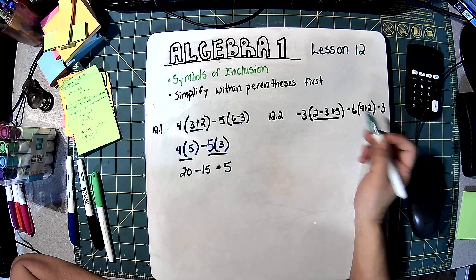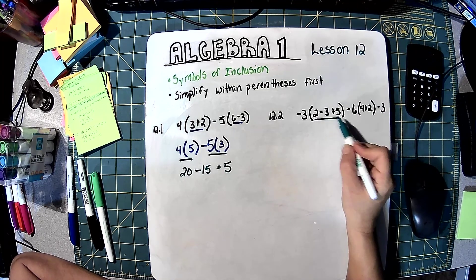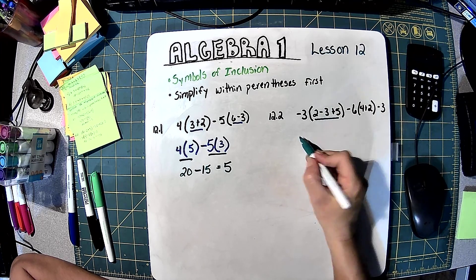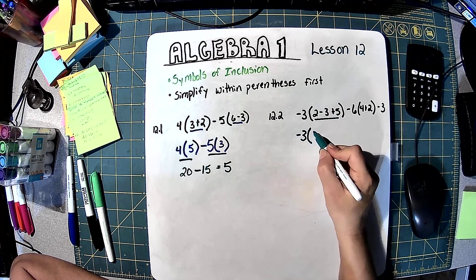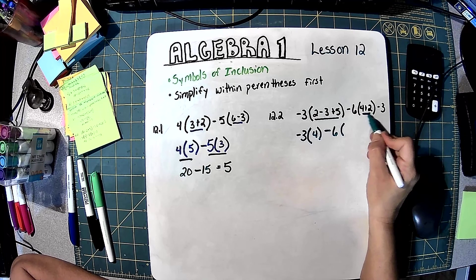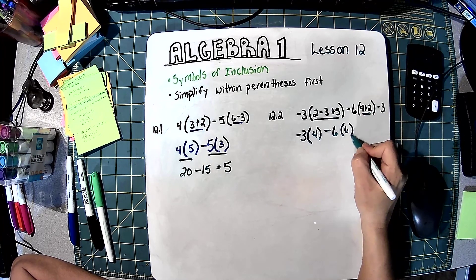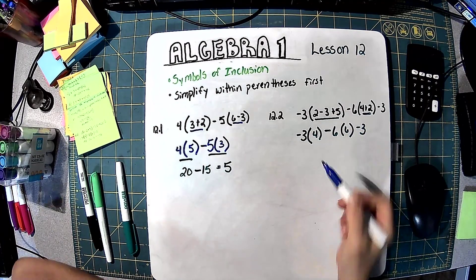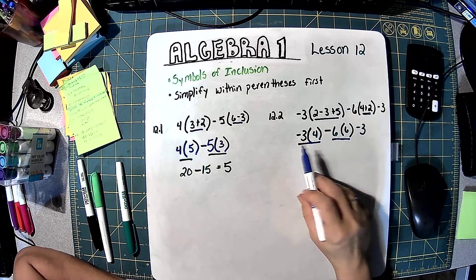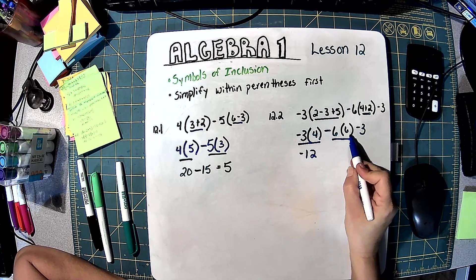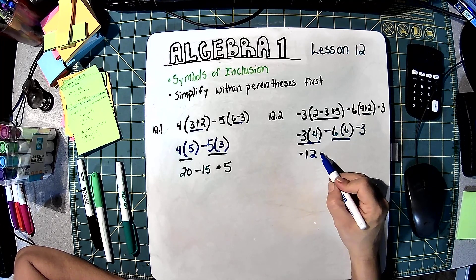Inside the first parentheses we have 2 minus 3 plus 5. 2 minus 3 is negative 1, and negative 1 plus 5 is 4. So we have negative 3 times 4. Then for the second parentheses, 4 plus 2 is 6 minus 3, giving us 3. Now doing all multiplication: 3 times 4 is 12, negative times positive is negative 12. And 6 times 6 is 36, negative times positive is negative 36.